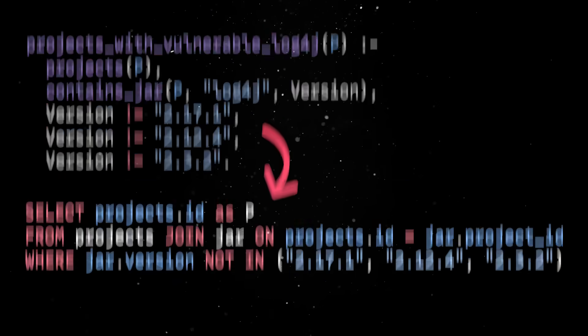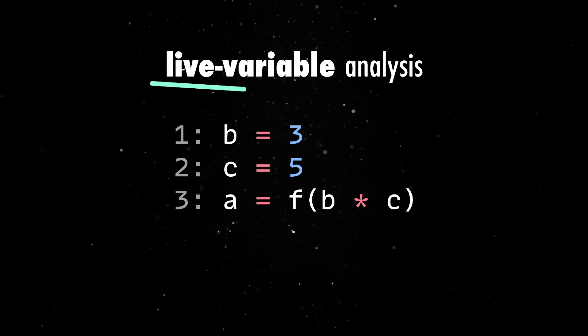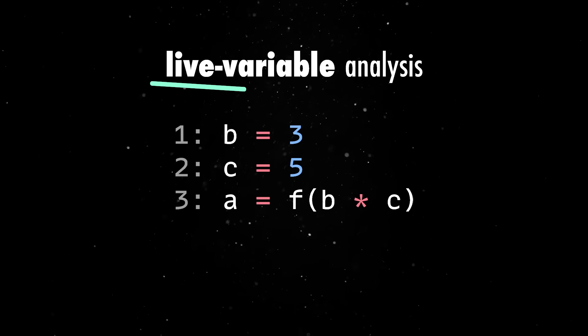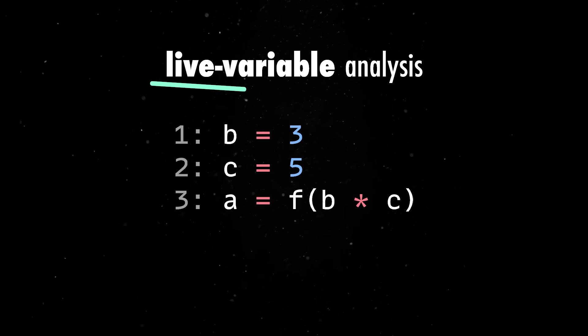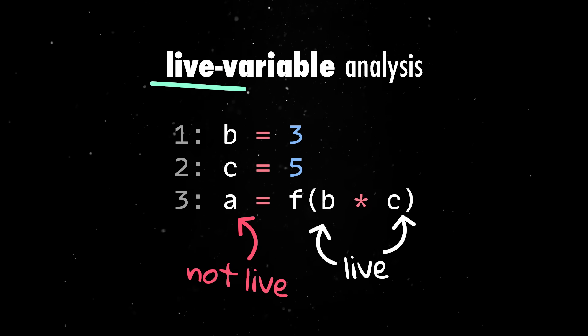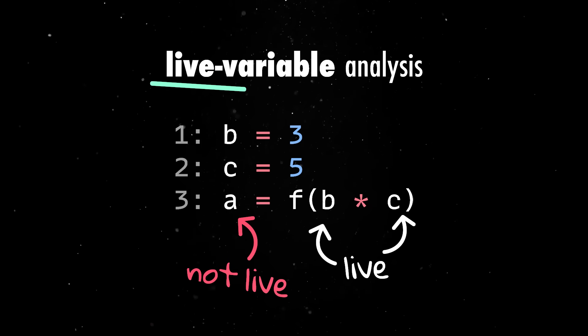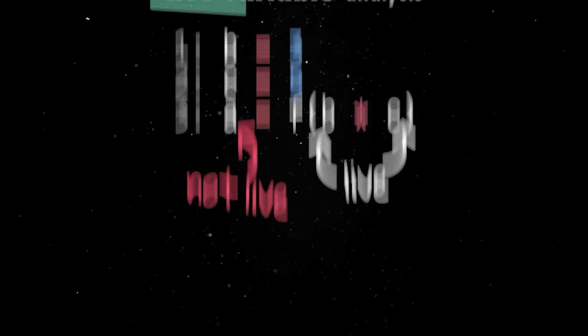For a more advanced example, let's say you are doing a live variable analysis, which is a classic step in compiler optimization. The idea is to figure out which variables still hold values that might be used later, so you can optimize memory usage or detect bugs.